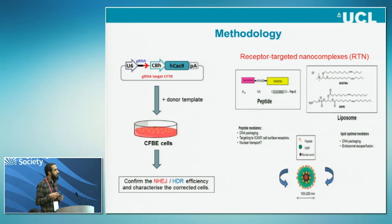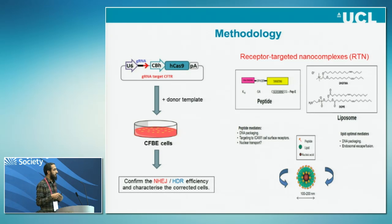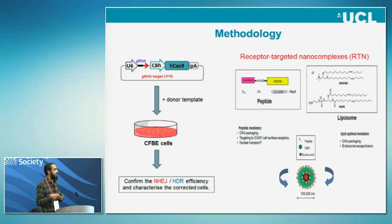To deliver this system, in our lab we developed nanoparticles. It's two parts: a liposome to encapsulate the CRISPR-Cas9, and when we have a neutral lipid it enhances endosomal escaping. The other part, which is also important for our system, is using a peptide. The peptide gives more specificity for the nanoparticles. For targeting the epithelium cells, we are using peptide E.